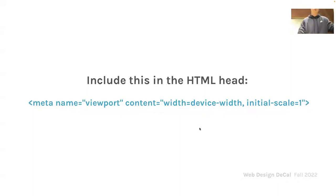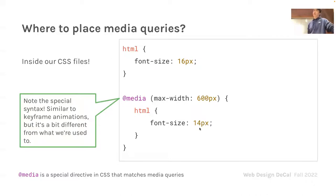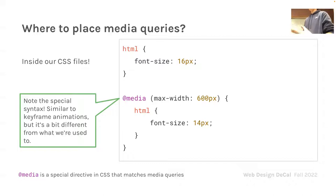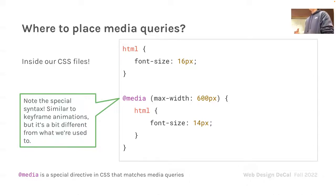Inside your CSS, the syntax for a media query uses the special @media keyword to signify a media query. What goes inside the parentheses is a specific condition — essentially an if-statement. For example, if the website is less than 600 pixels wide, we will have an HTML block with font-size 14.